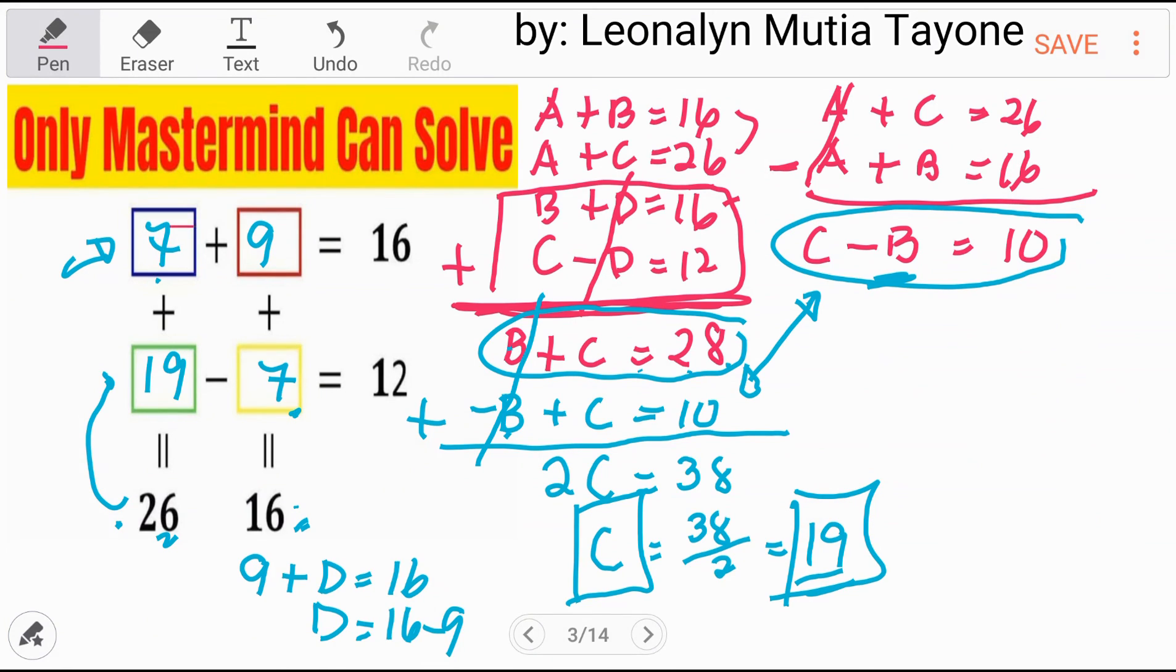So, these are the answers. This is 7, 9. This one is 7. This is 19. Let's double check. 7 plus 9, 16. 9 plus 7, 16. 19 minus 7, 12. 7 plus 19, 26. So, therefore, the answer to this question is 7, 9, 19 and 7. These are the numbers. Thank you.